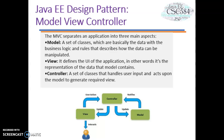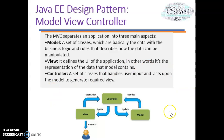MVC separates an application into three main aspects. First, the model, which contains a set of classes representing the data with business logic and rules that describe how the data can be manipulated. Second, the view, which defines the UI of the application — in other words, the representation of the data that the model contains. Lastly, the controller, which is a set of classes that handle user input and act upon the model to generate the required view. As you can see in the figure, this is a typical design pattern for MVC.